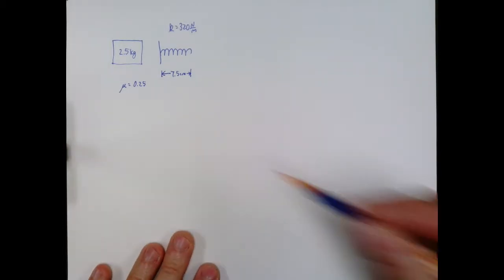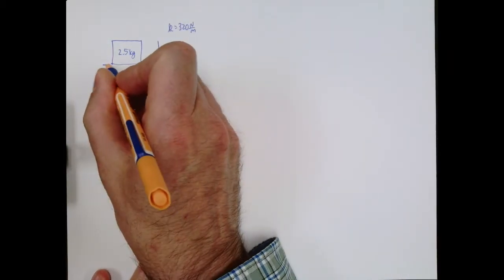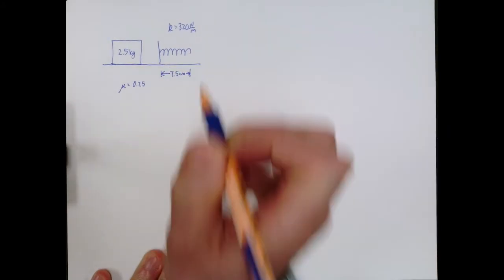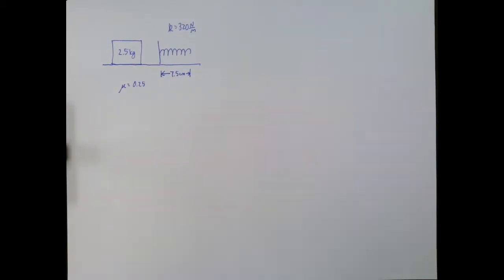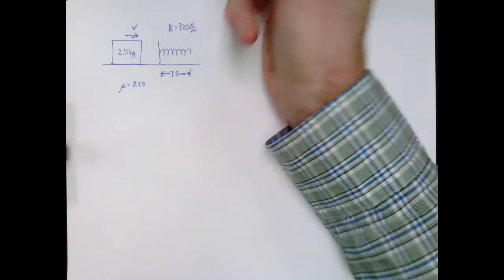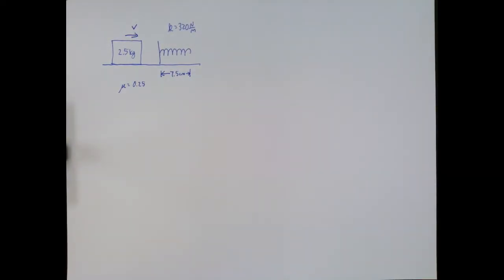So we have a spring. That right there tells you that probably you're going to have to use work and energy considerations. We also have a moving object that has a certain velocity that's hitting the spring. All of those things give you an idea that we're going to have to use work or energy considerations.